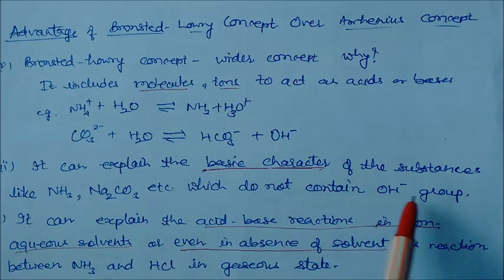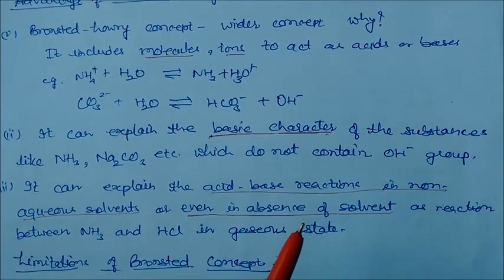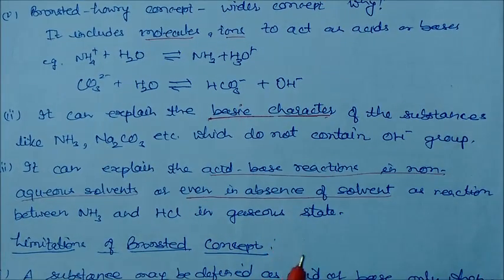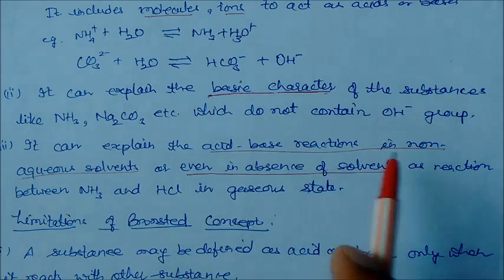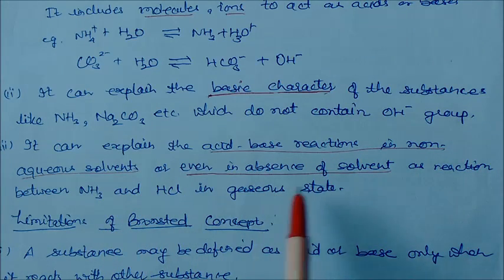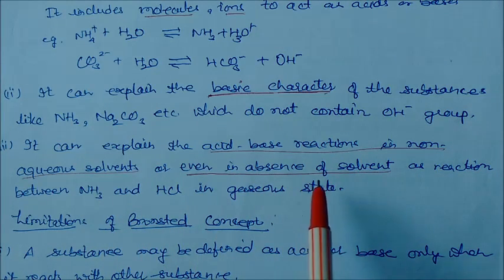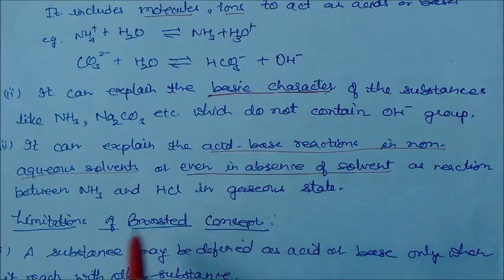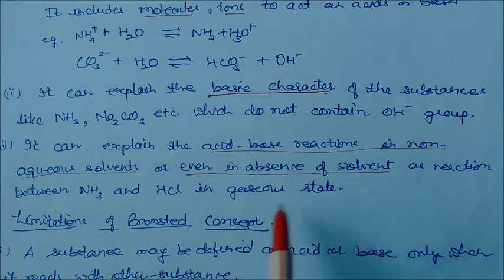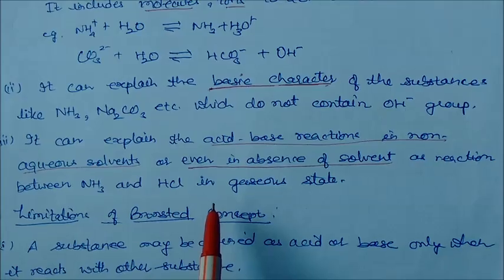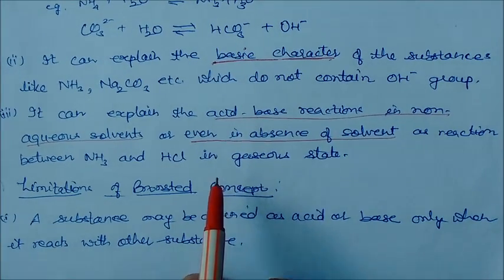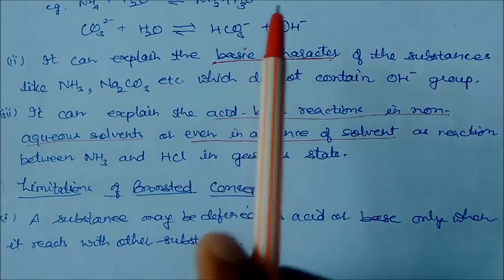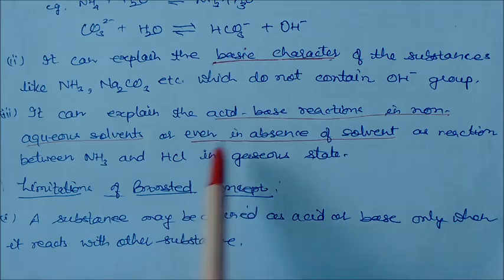The Bronsted-Lowry concept explains the basic character of substances which do not contain an OH group — which was absent in the Arrhenius concept. Third, it can explain acid-base reactions in non-aqueous solvents or in the absence of solvent, such as the reaction between ammonia and HCl in the gaseous state. These are the key advantages: handling molecules and ions, basic character without OH, and reactions without solvent.